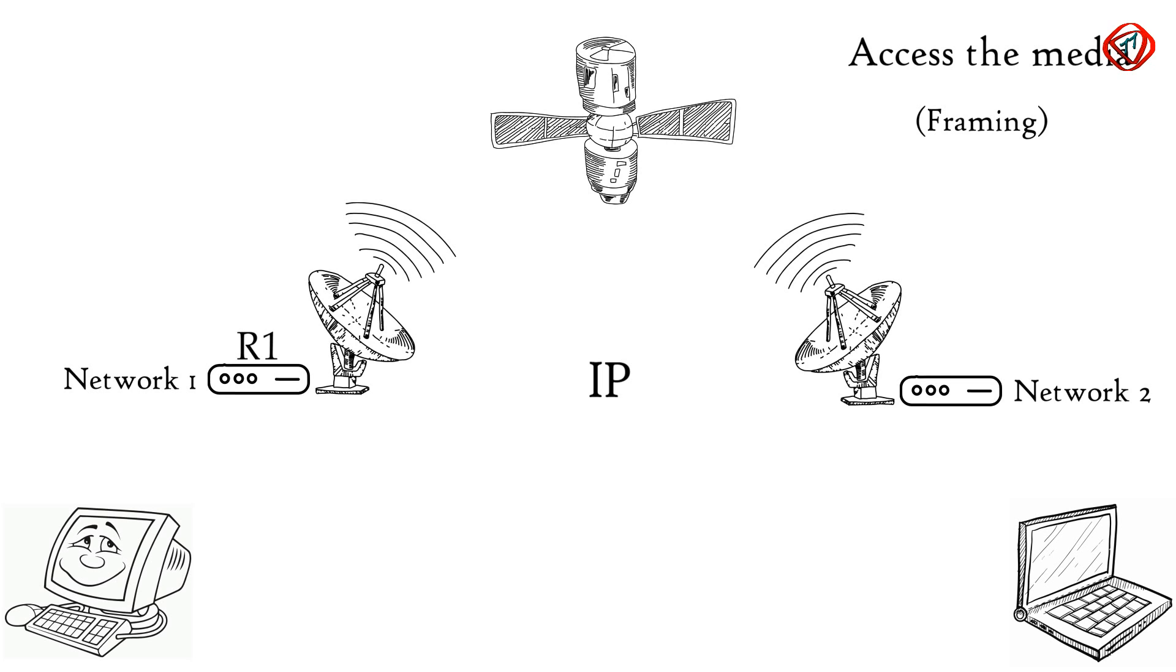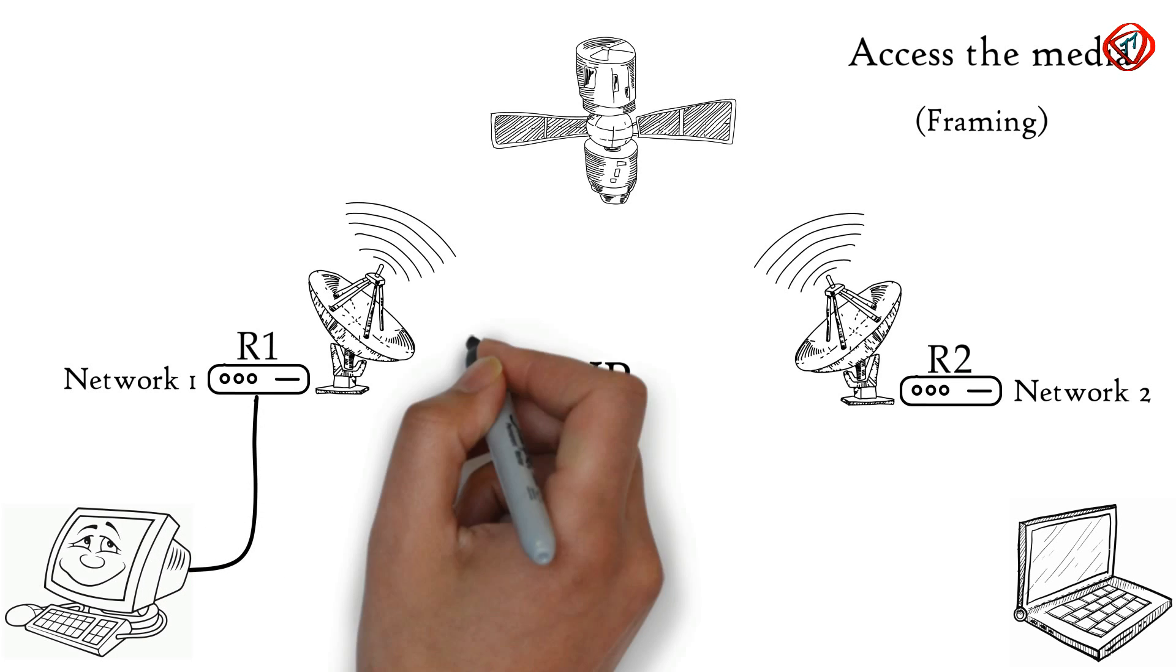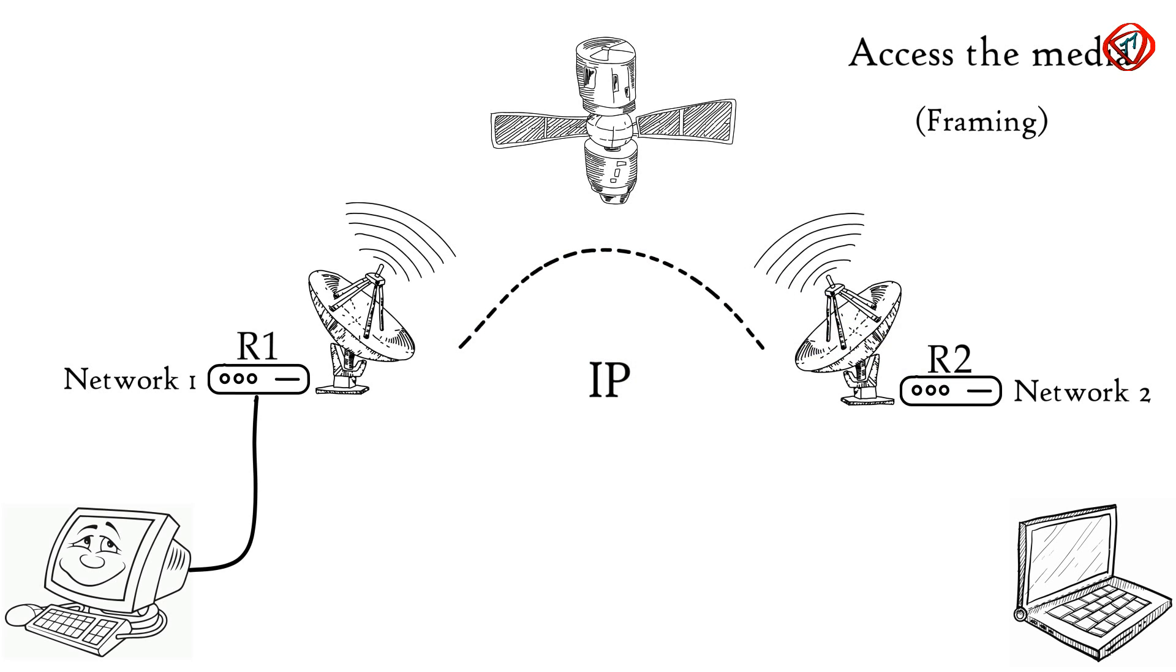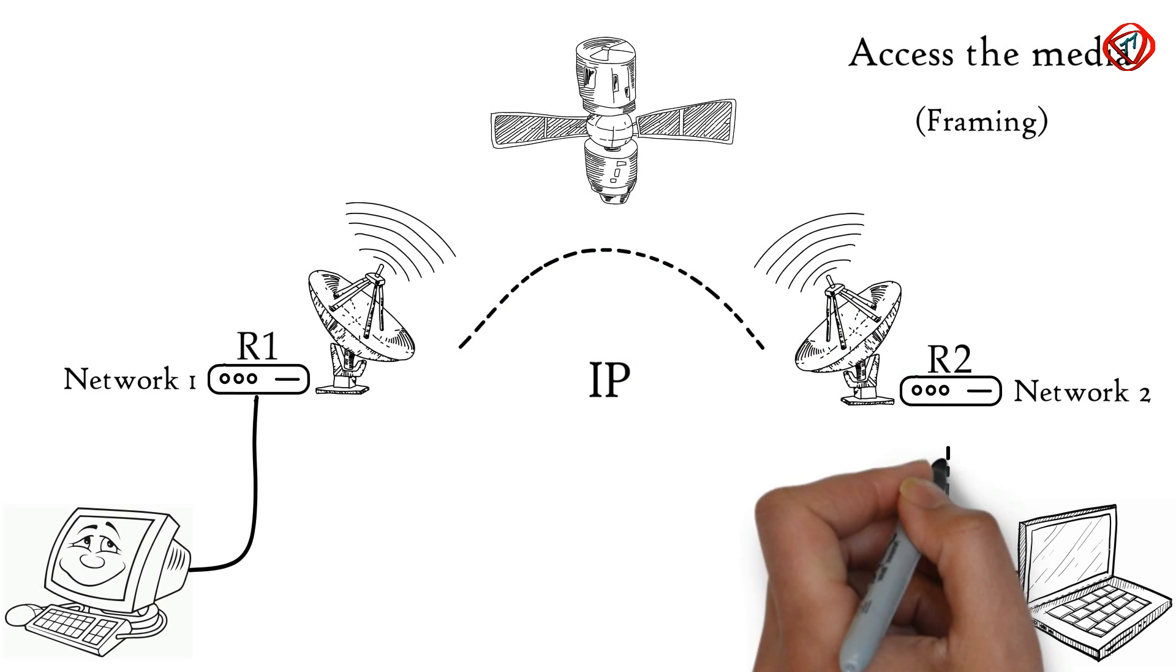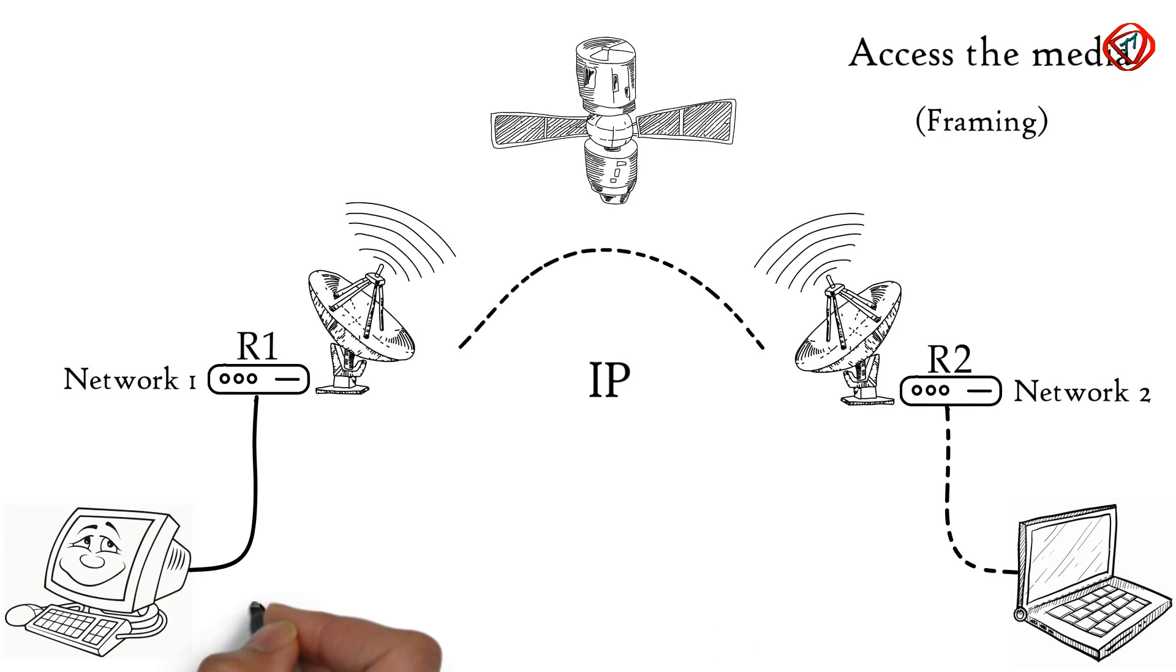In this example, desktop is connected to router R1 via an ethernet cable. Router R1 and R2 are connected via a satellite link, and laptop is connected to router R2 via a wireless link. Now desktop wants to send some data to laptop.